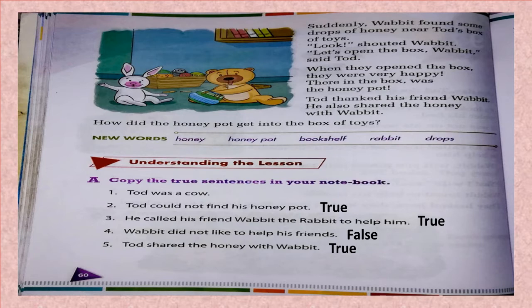How did the honey pot get into the box of toys? Both the friends were wondering. Read this chapter, children, and learn the spellings of the new words. Now let us read the new words: honey, honey pot, bookshelf, rabbit, drops.